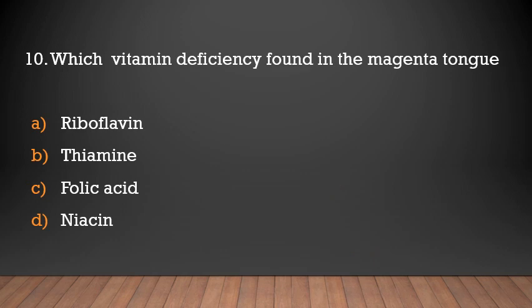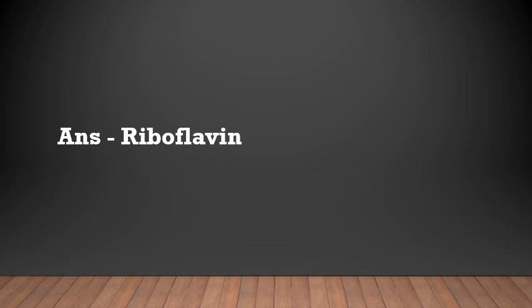Which vitamin deficiency is found in magenta tongue? Options: riboflavin, thiamine, folic acid, niacin. The answer is riboflavin — riboflavin deficiency is found in magenta tongue.